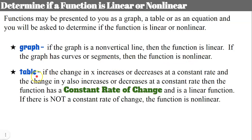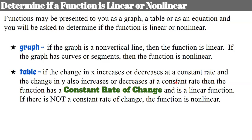If you're given a table, if the change in x increases or decreases at a constant rate, and the change in y also increases or decreases at a constant rate, then the function has a constant rate of change and is linear. Determining whether x and y are each changing by a constant rate is essentially finding slope. If there is not a constant rate of change, the function is nonlinear.